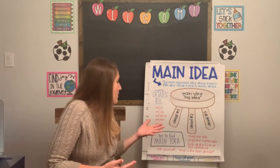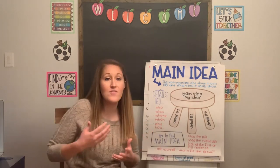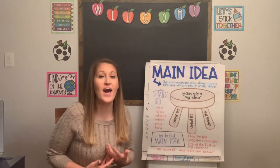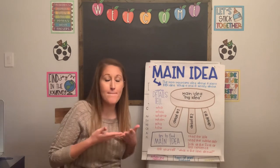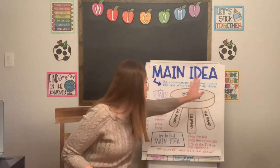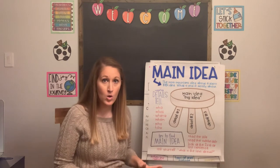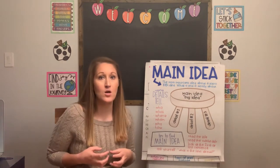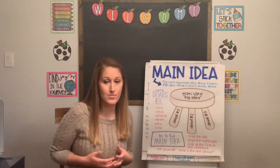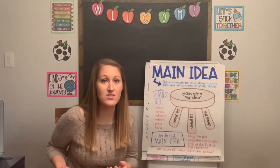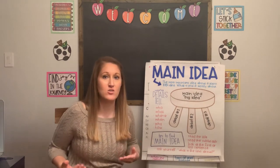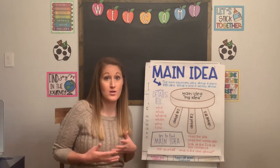When we talk about main idea, we have these supporting details — the information and facts that support what that main idea is all about. That's where the idea of this chair comes into play. We can't have a main idea without supporting details, because then it's just a fact. But when we have these supporting details, we have information that supports our claim.